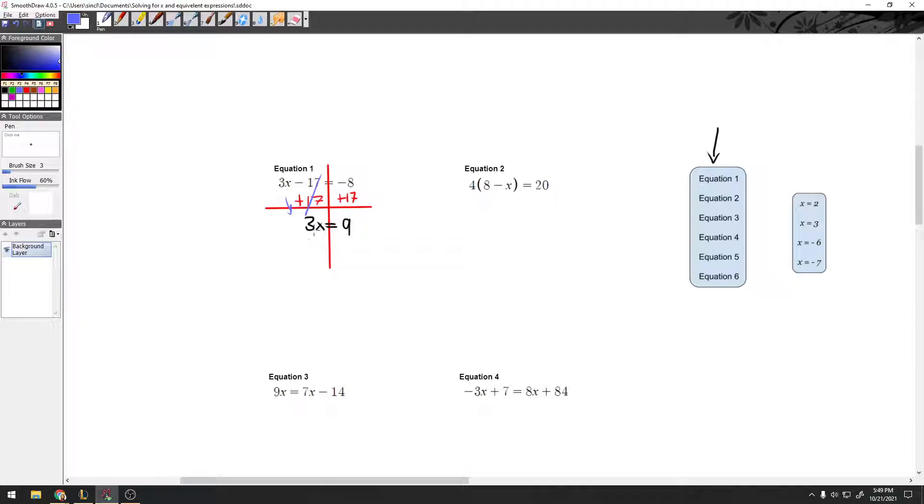Then what I'm going to do is get rid of this 3, and I can do that by dividing by 3 on both sides. What that's going to do is cross out these 3s. 3 divided by 3 is going to be 1x. I don't need to have that 1 here, so I'm just going to have x equals, and I put this in my calculator, 9 divided by 3 is 3.